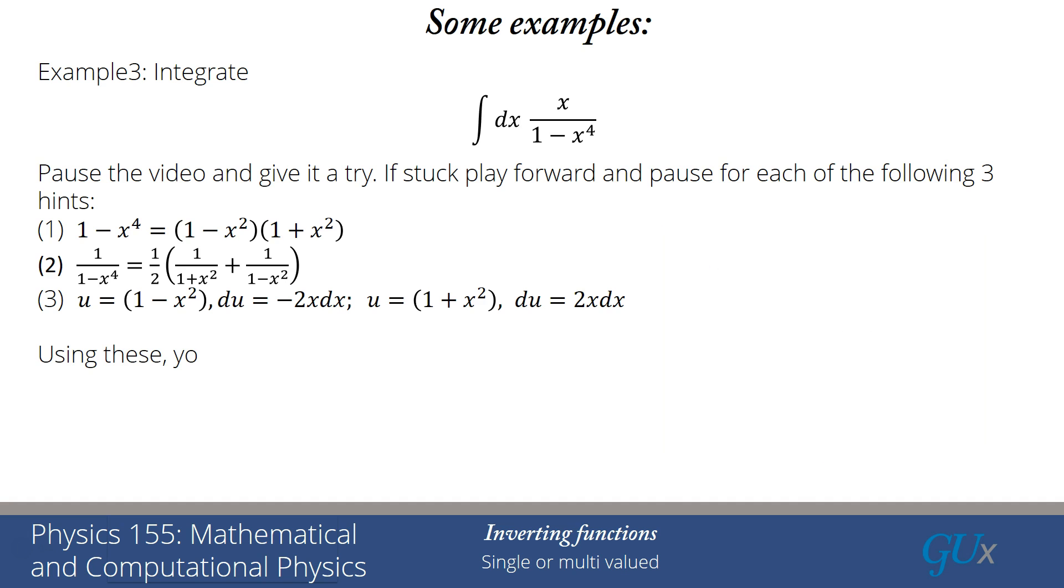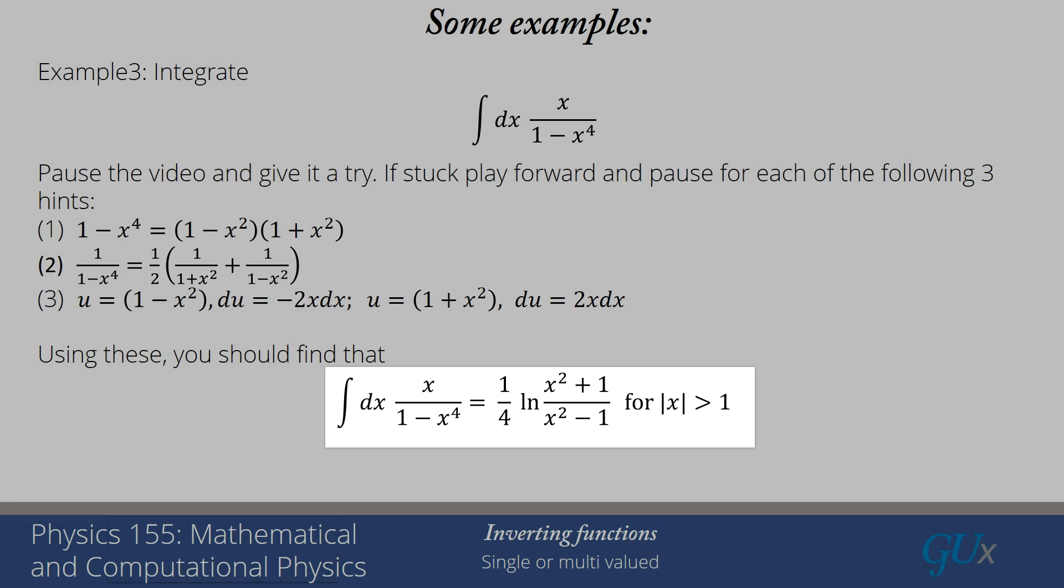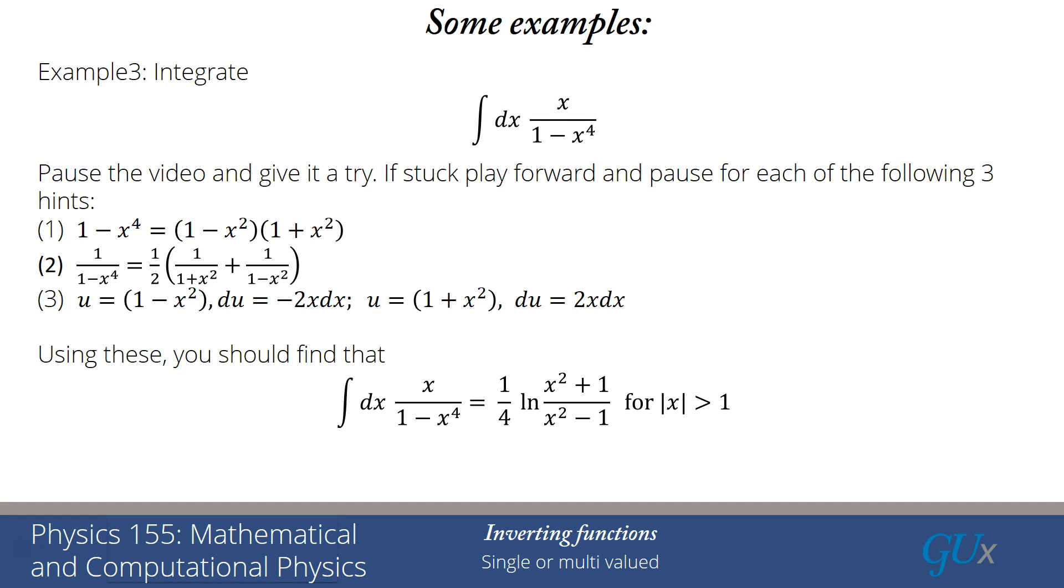Okay, here's what the answer is. If you used all of those hints, you should have found that the integral dx, x over 1 minus x to the 4th, is equal to 1 fourth, the logarithm of x squared plus 1, divided by x squared minus 1, which of course is going to hold when the absolute value of x is bigger than 1. Otherwise, you have a singularity, you have an infinity in the integral, and then you have to worry about how do you handle that infinity, and we're not going to talk about that at this point in time in the class.